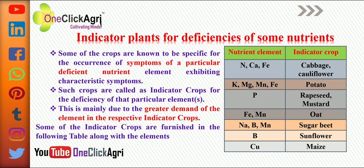Now let's see the nutrient elements with their respective indicator plants or crops. Here is a sample question: Question 1 — Which one of the following shows the deficiency of a nutrient element? There will be 4 or 5 options to choose from. Question 2 — Crop names such as cabbage, cauliflower, potato, rapeseed, and so on, are used as the indicator plant of which nutrient? There will be 4 or 5 options with plant nutrient element names, covering excess or deficiency. You may face these questions in upcoming exams.